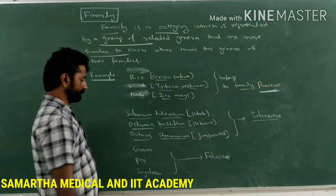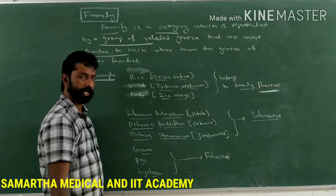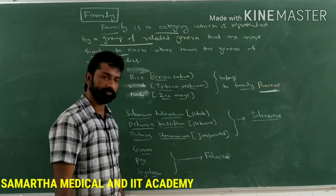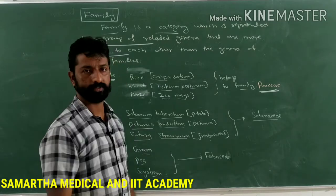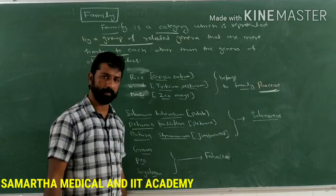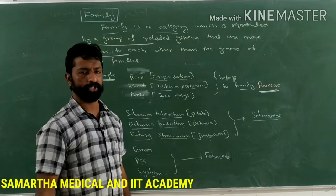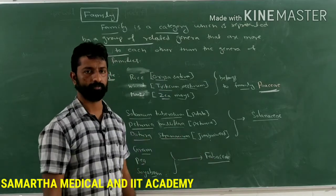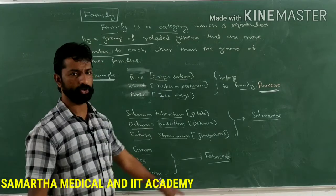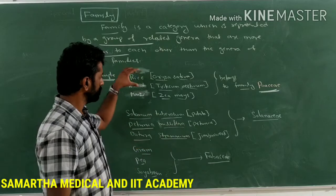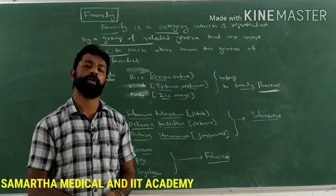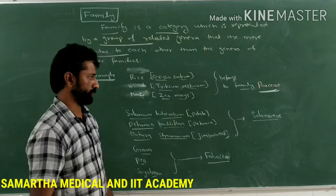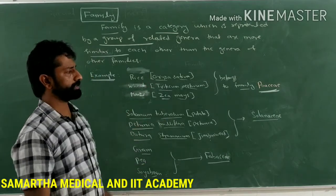Similarly, gram, pea plant, and soybean plant all belong to different genera, but they belong to a common family — Fabaceae. Try to find out the scientific names of these three plants. So gram, pea, and soybean belong to one family, Fabaceae. Remember these examples and which family they belong to, as this is very important for answering NEET and CET questions, and these examples can also be asked in the PU board exam.